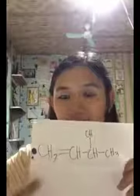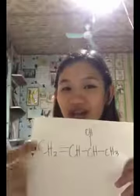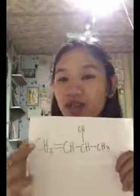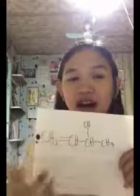The first step is name the parent hydrocarbon, meaning i-name natin yung pinakalongest hydrocarbon. Paano natin malalaman? By identifying the longest carbon chain. We always remember that the longest carbon chain must include the double bonded — kailangan naka-include dun ang double bonded, which is this. Kailangan naka-include ito sa longest carbon chain.